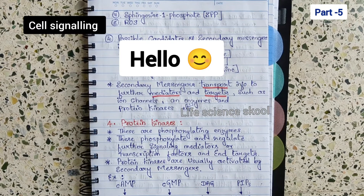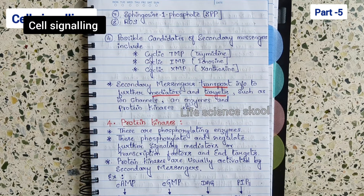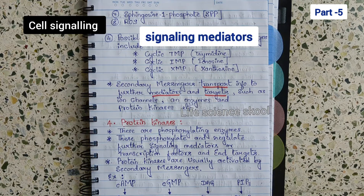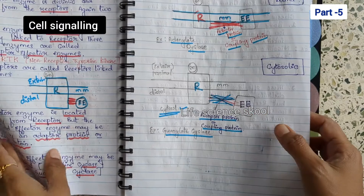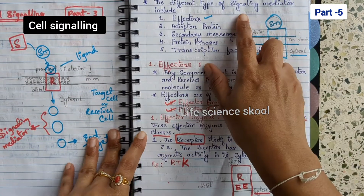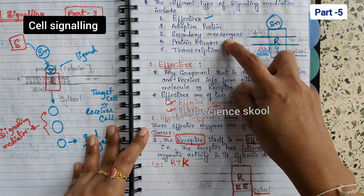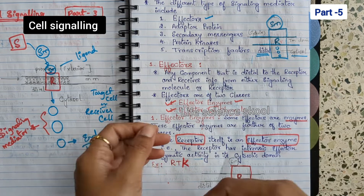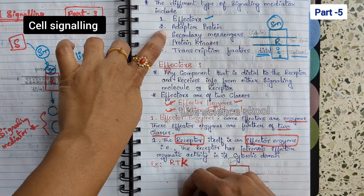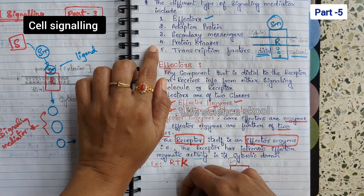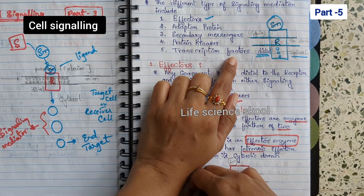Hello everyone, welcome back to my YouTube channel. This is Soumya and this is Part 5 on cell signaling. Today we are going to continue with the signaling mediators. In the previous videos I covered effectors, adapter proteins, and secondary messengers. In this video we will continue with the two remaining signaling mediators: protein kinase and transcription factors.